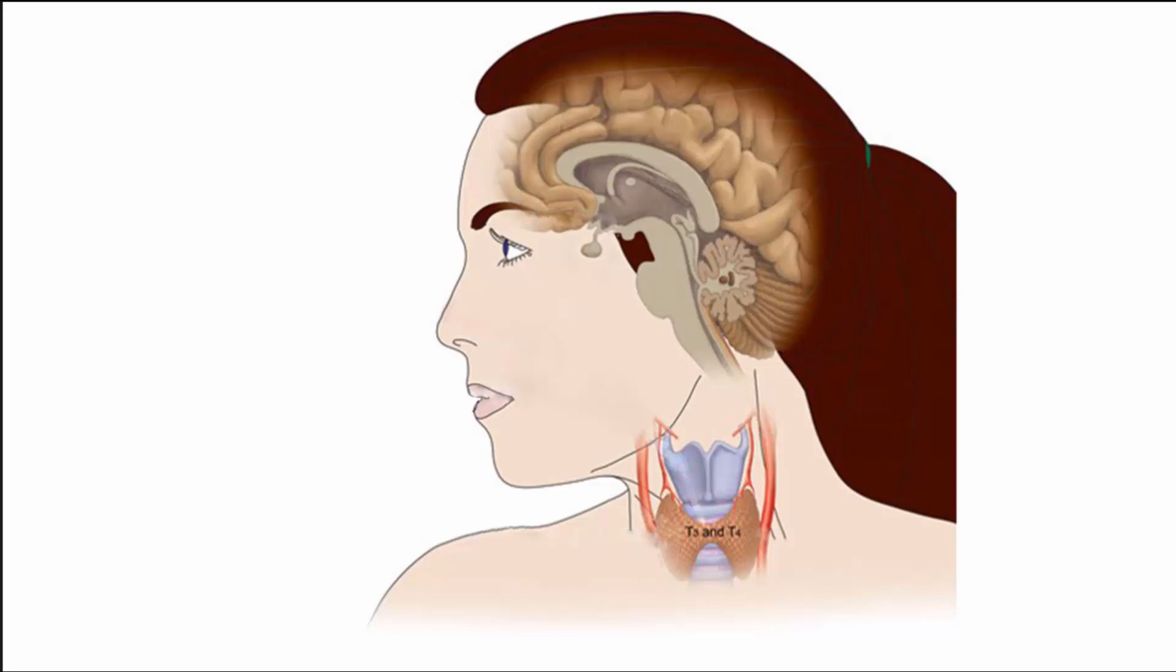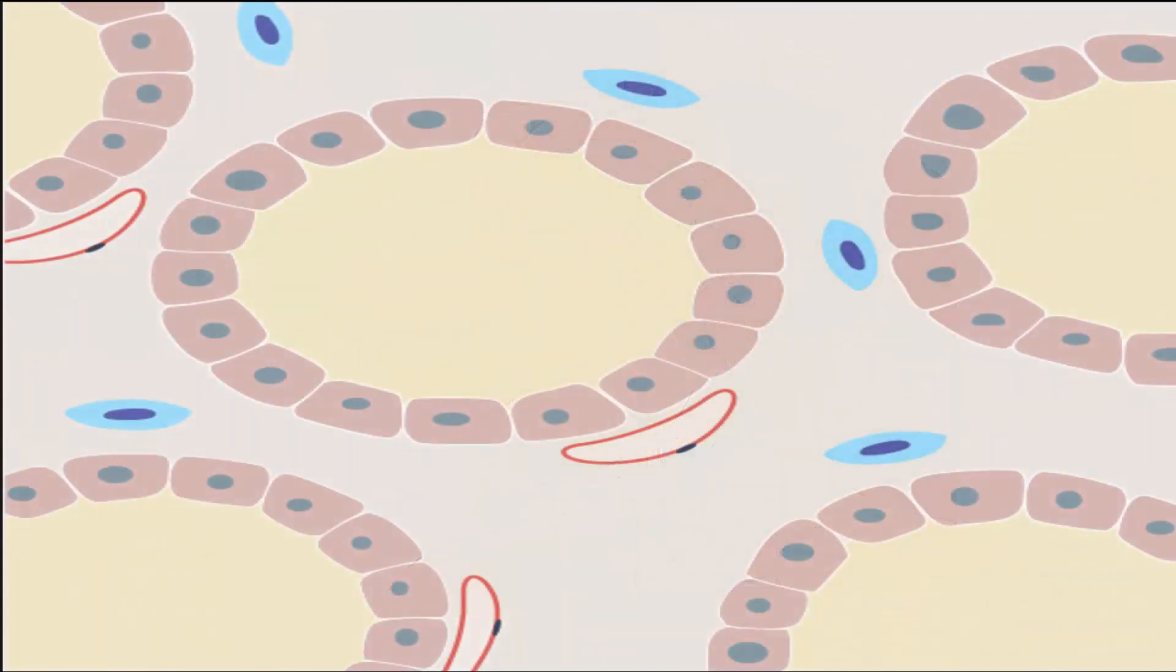The thyroid gland is located in the neck anterior to the trachea, just inferior to the larynx. To further understand the thyroid, let's zoom in. Here is a zoomed-in picture of the thyroid gland. Let's label all the parts of thyroid tissue.